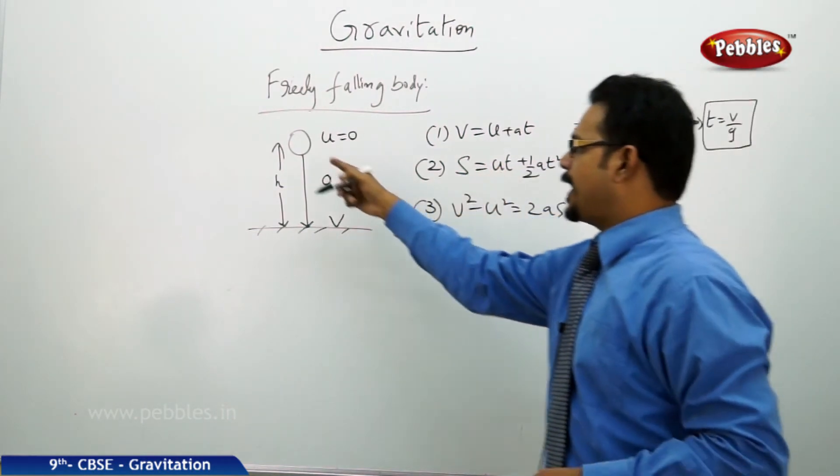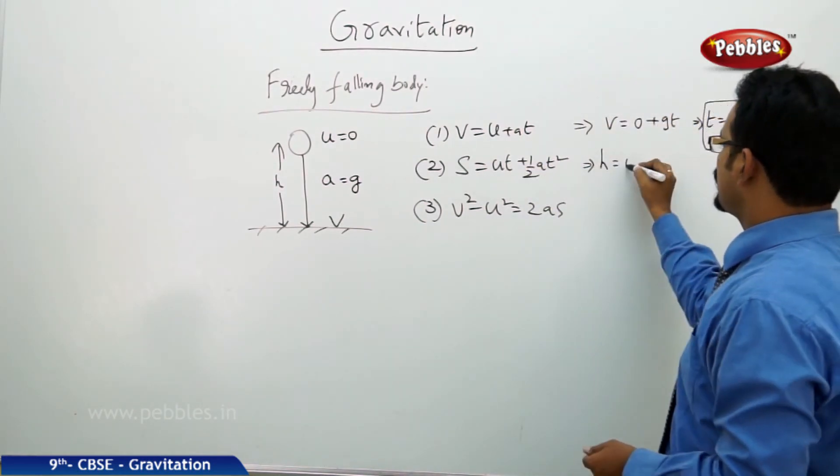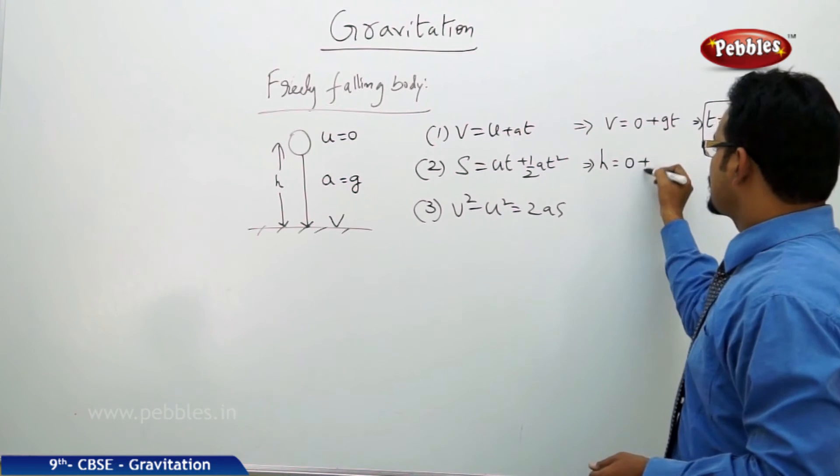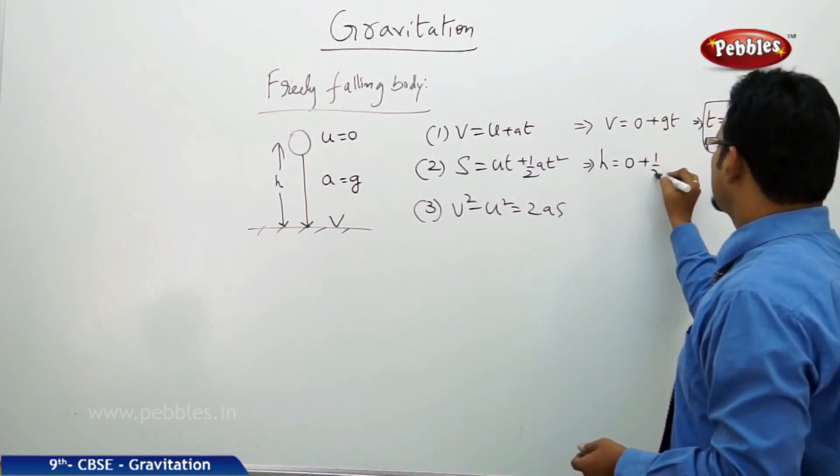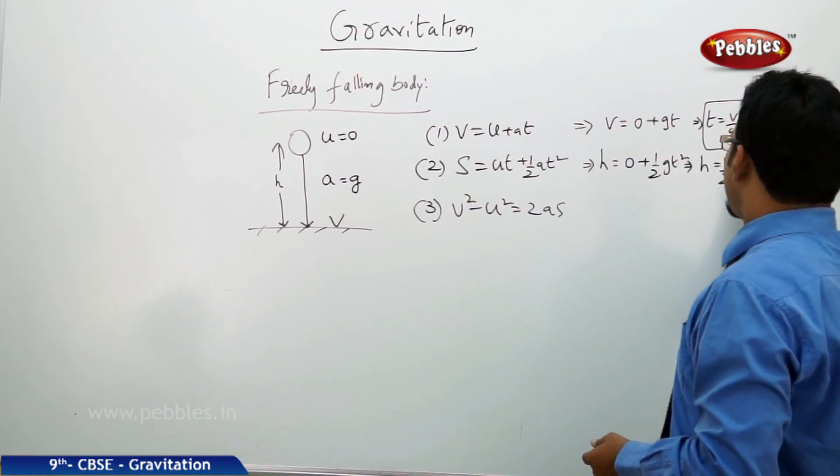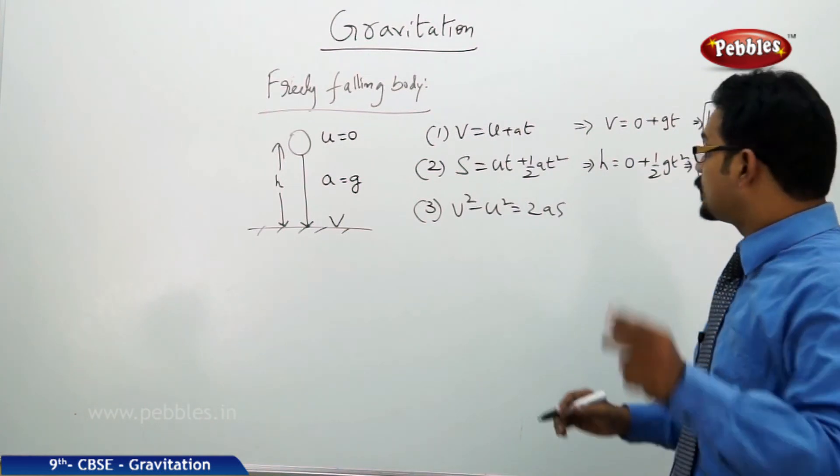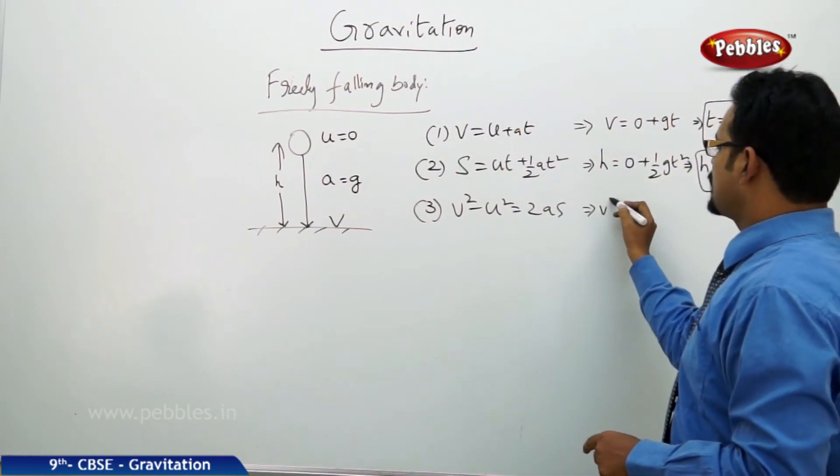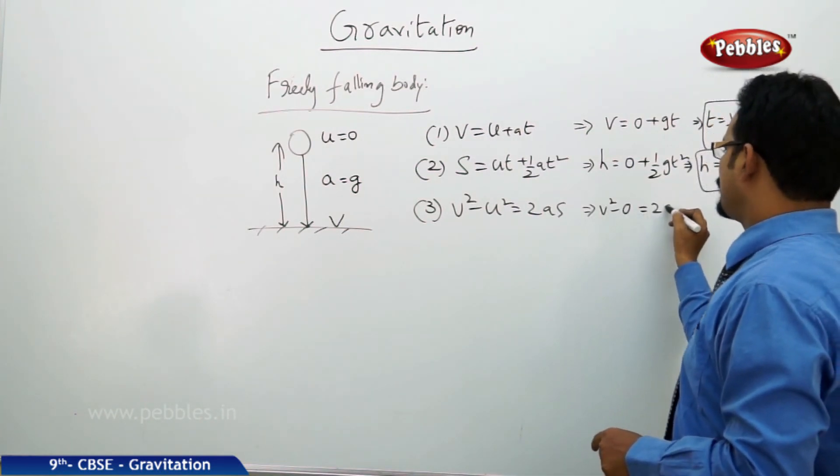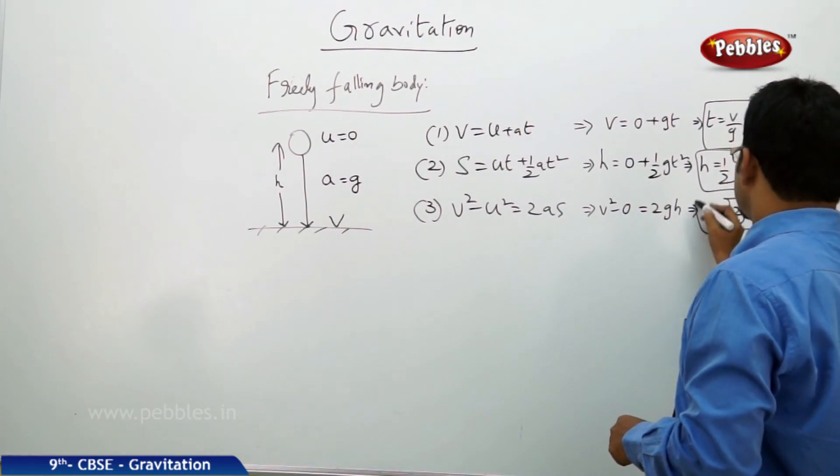Next, s is nothing but height traveled which is h. U is 0, so ut is 0 plus half at square means half gt square implies h equals to half gt square. Now third equation: v square minus 0 equal to 2gh implies v equals to root over 2gh.